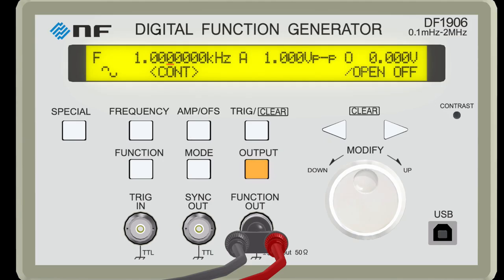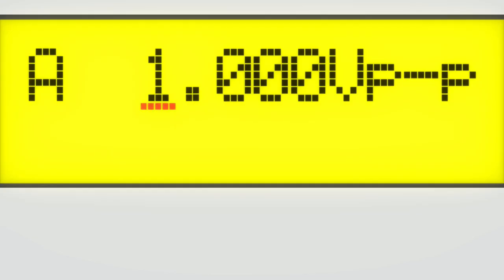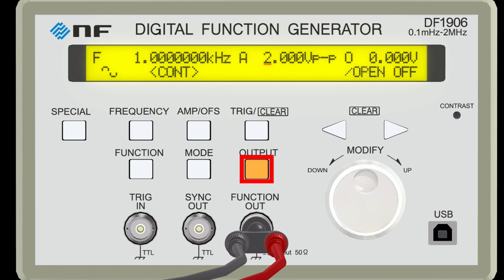The next step is to set the voltage. The voltage should be set to 2 volts peak to peak. Press the amp, OFS button, move the cursor to the first position, and turn the dial to set the value to 2. When the setting is complete, press the output button to turn on the oscillator output.